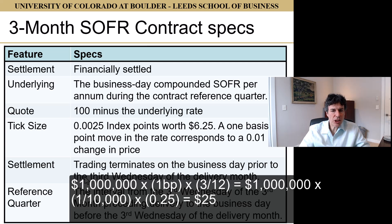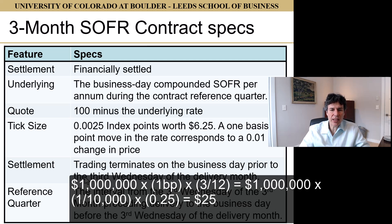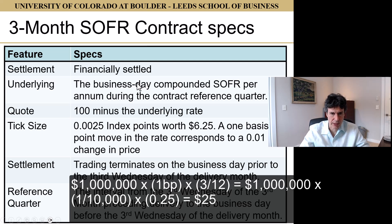Settlement trading terminates on the business day prior to the third Wednesday of the delivery month. The reference quarter is the interval from the third Wednesday of the third month preceding delivery to the business day before the third Wednesday of the delivery month. Let's look at a particular contract to make all of this clear.